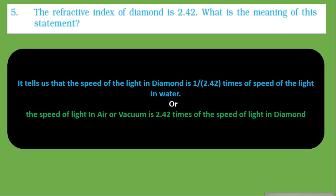Now: the refractive index of diamond is 2.42 — what is the meaning of this statement? Refractive index directly tells us information about the speed of light in that medium. It tells us that the speed of light in diamond is 1/2.42 times the speed of light in air. In other words, the speed of light in air or vacuum is 2.42 times the speed of light in diamond. When we indicate a refractive index, it is always with reference to air.